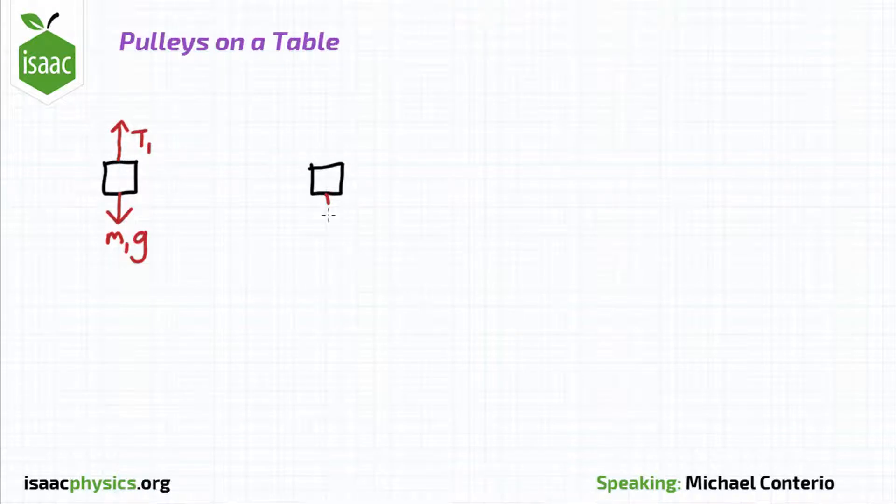It generally consists of the weight of the particle, the tension in the string acting on the particles, and also for a particle of mass m3, the normal reaction force upwards from the surface. There's no friction in any of these, so we don't need to worry about that.